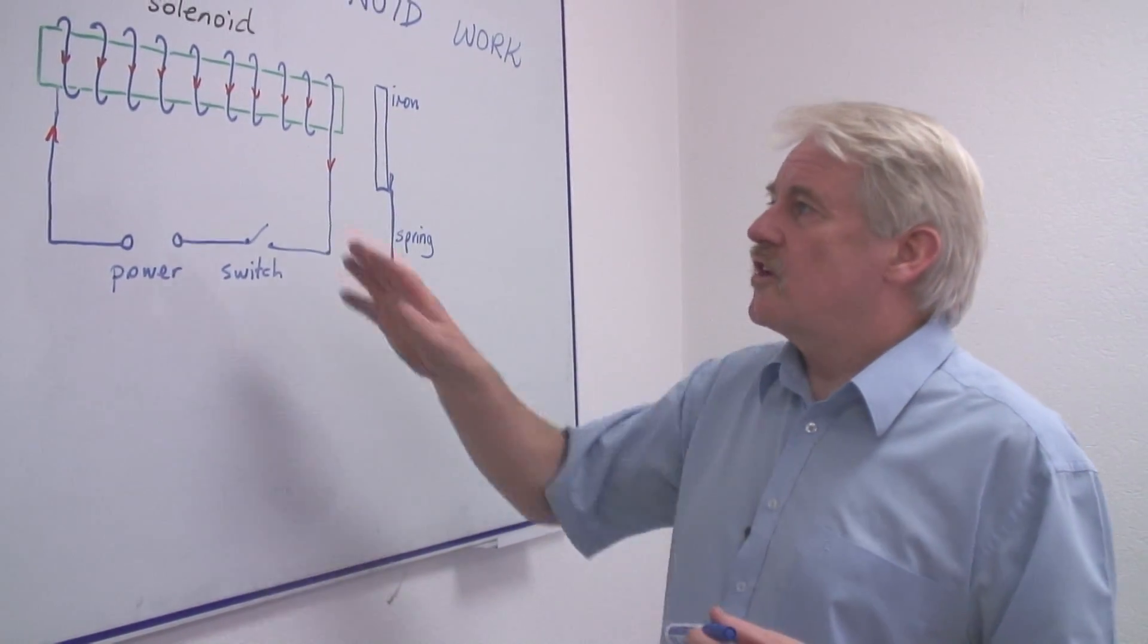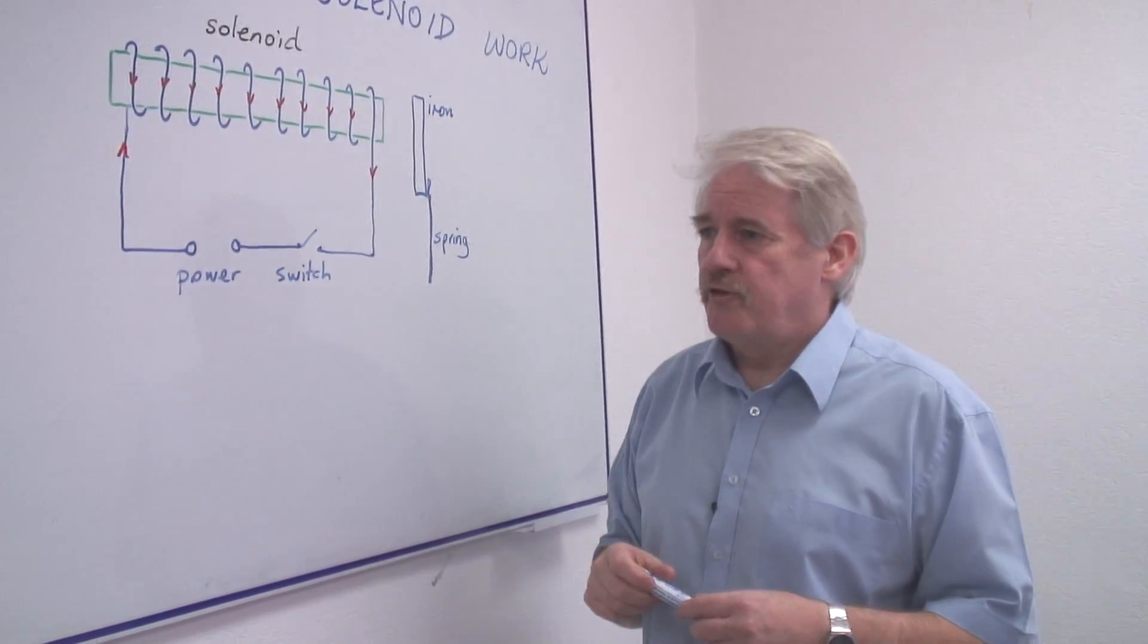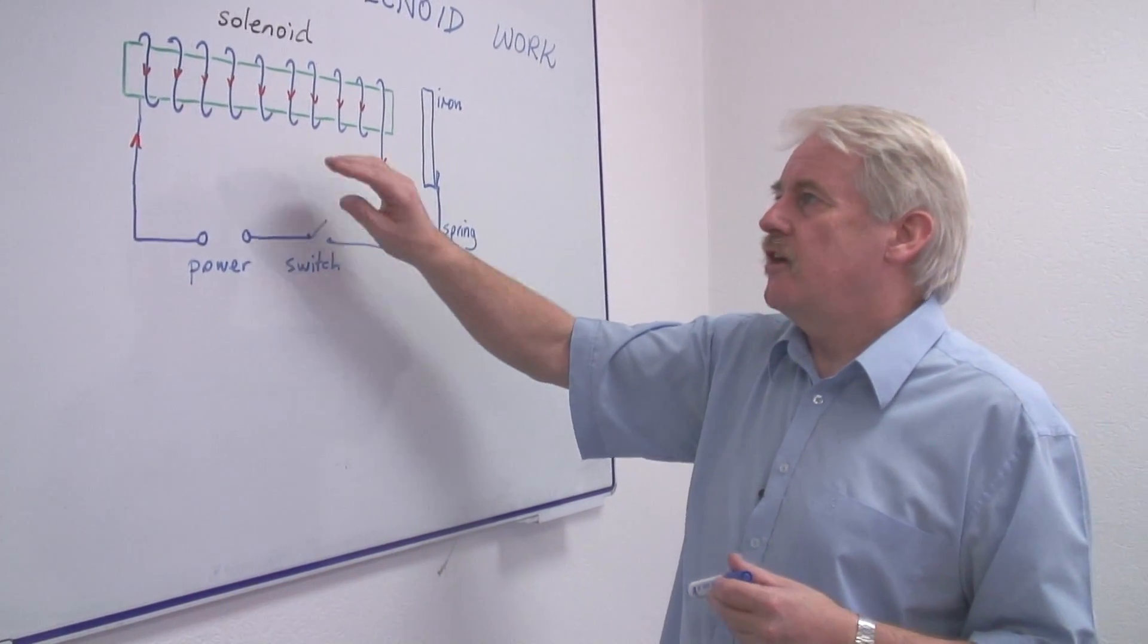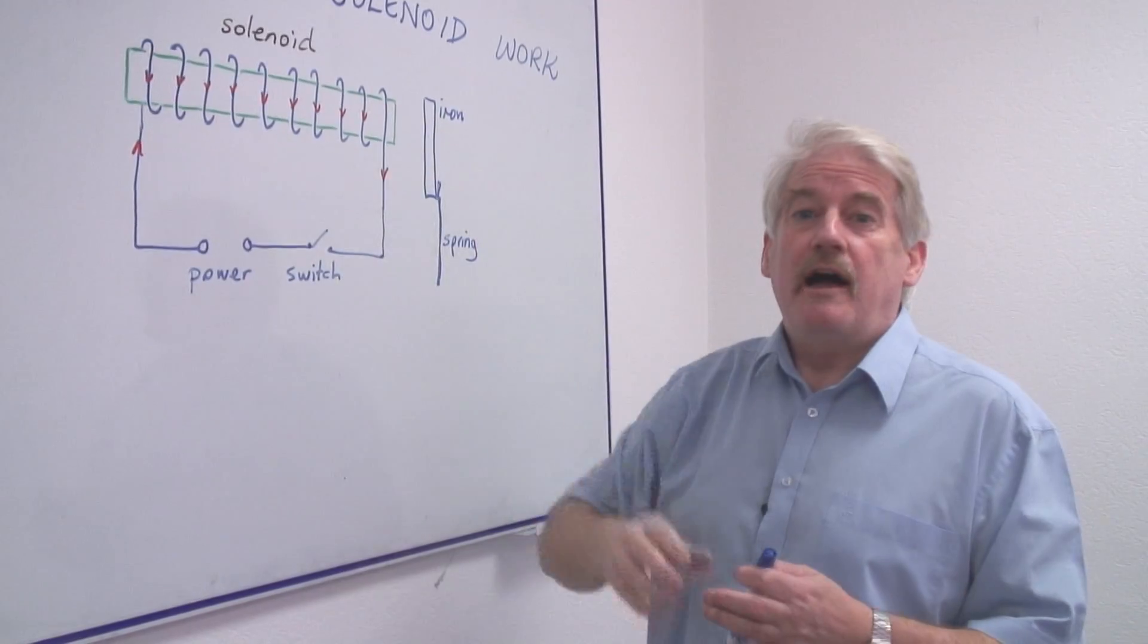These solenoids are used everywhere, particularly in houses, for cutting off the current if the current is too great. So if the current gets too big, the solenoid becomes a much more powerful magnet.